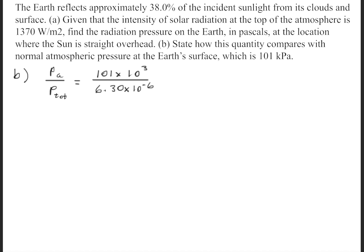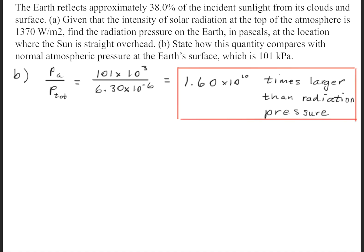Part B wants us to compare the previous pressure that we found from part A to the normal atmospheric pressure. So we'll simply take the ratio between these two. So we'll have 101 times 10 to the 3rd power divided by 6.30 times 10 to the minus 6, and we'll find that the ratio is 1.60 times 10 to the 10th power. So the normal atmospheric pressure is 1.60 times 10 to the 10th times larger than the radiation pressure.